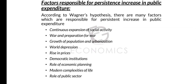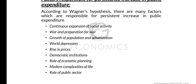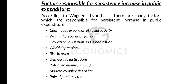The third reason is the growth of population and urbanization: when there is an increase in population and urbanization, more public expenditure is required. The fourth reason is world depression — when there is a depression, the government has to increase public expenditure to increase demand, which is a key Keynesian policy. The fifth is a rise in prices, and the sixth is democratic institutions.